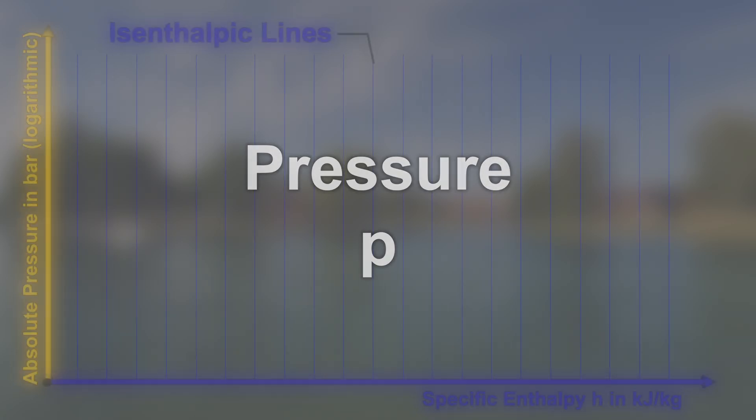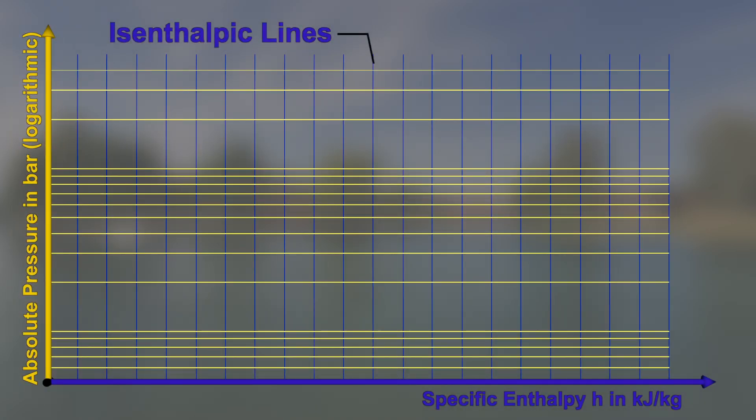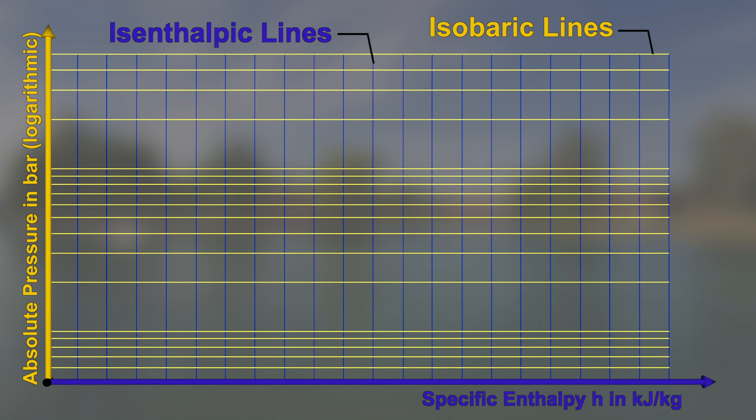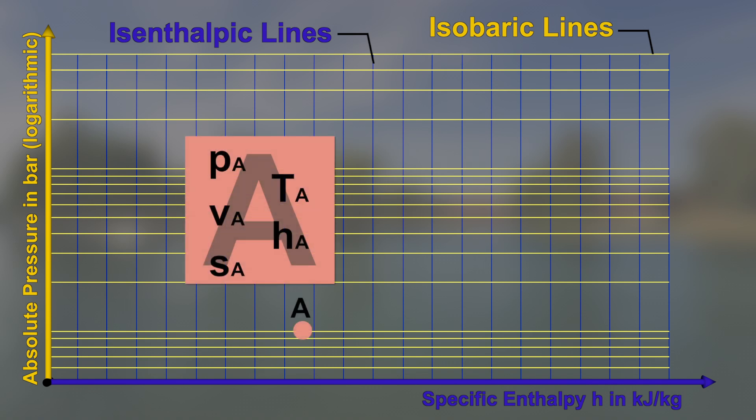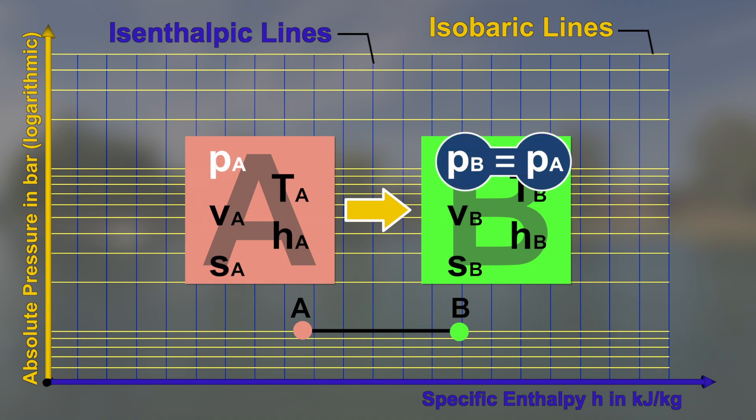Lines with constant pressure p are called isobaric lines. They stretch horizontally because p is plotted on the vertical axis. If a state of a fluid changes from state A at constant pressure p along an isobaric line to state B, we call it an isobaric change of state.